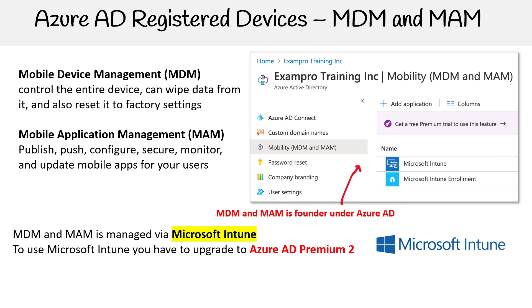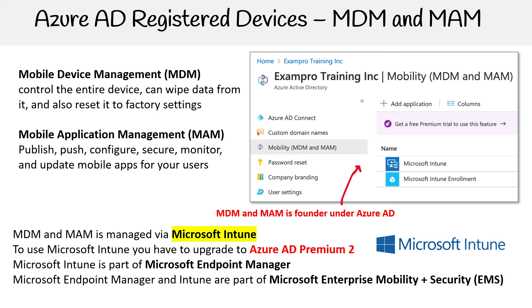To use Microsoft Intune, you have to upgrade to Azure AD Premium 2. Microsoft Intune is part of the Microsoft Endpoint Manager, and then Microsoft Endpoint Manager and Intune are part of the Microsoft Enterprise Mobility and Security, EMS.